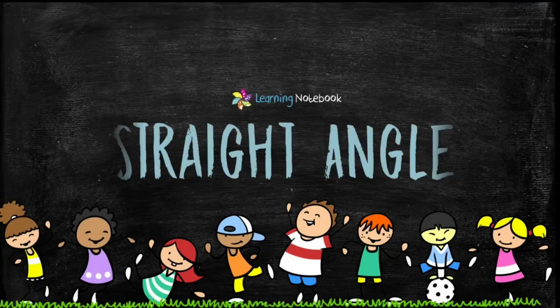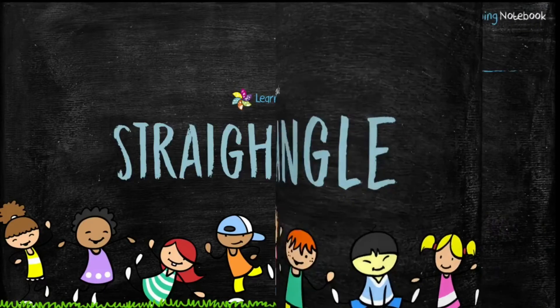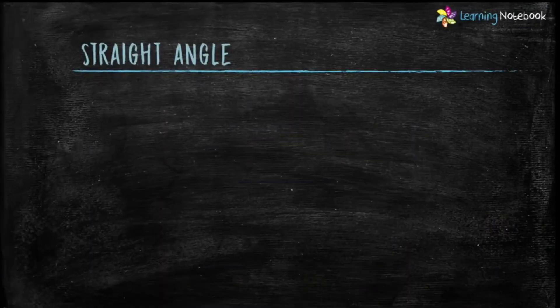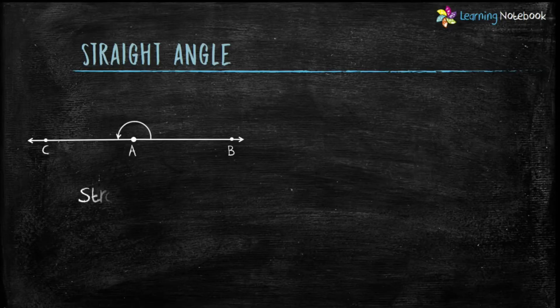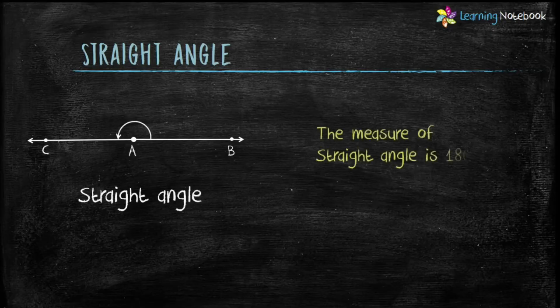The fourth type of angle is straight angle. The measure of a straight angle is exactly 180 degrees. So here in this figure, angle CAB is a straight angle.